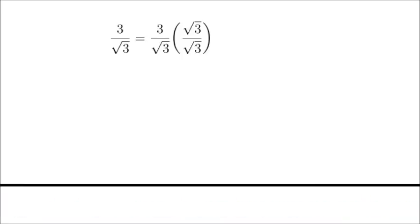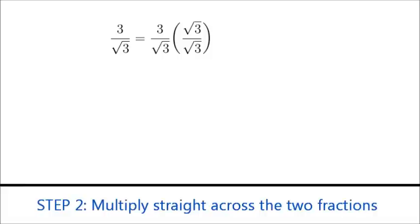When we multiply fractions, we can just multiply straight across. So on top, we'll get 3 times the square root of 3, which we can't really simplify. On the bottom, we'll have the square root of 3 times the square root of 3, which just gives us 3.